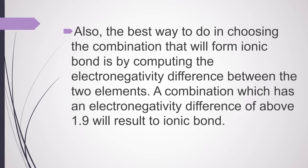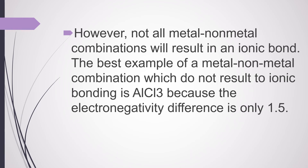Also, the best way to choose the combination that will form an ionic bond is by computing the electronegativity difference between the two elements. A combination which has an electronegativity difference of above 1.9 will result in an ionic bond. However, not all metal–non-metal combinations will result in an ionic bond.